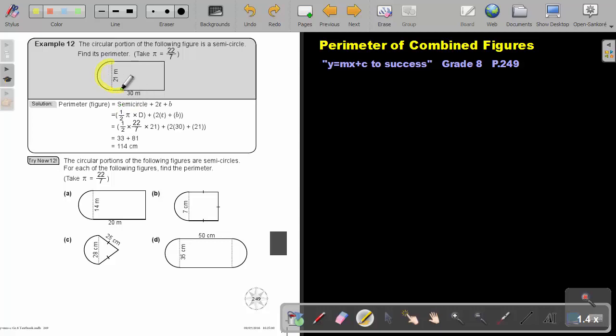Plus it will be the length of the rectangle, plus one breath, plus another length. Not that length, only the outside lines.